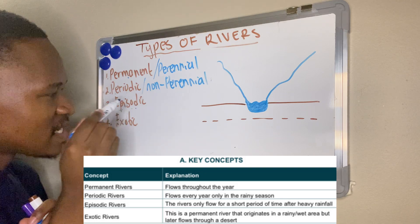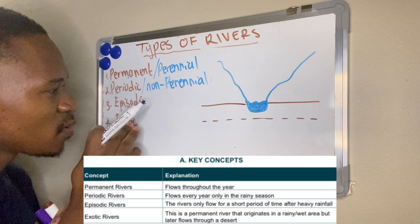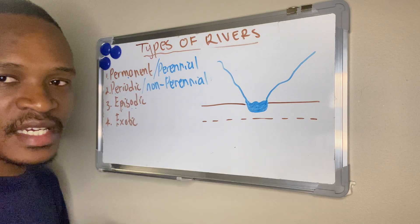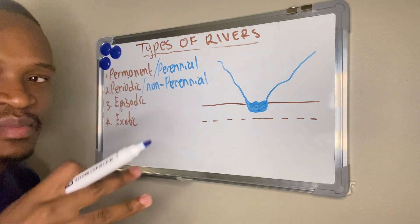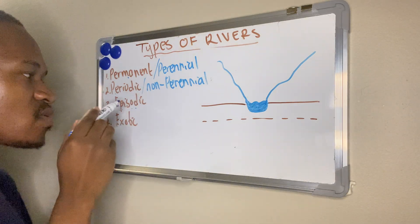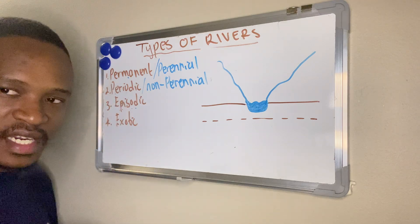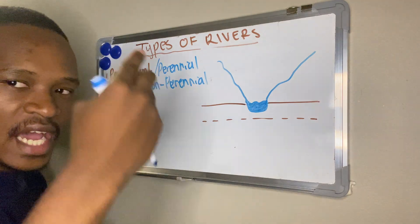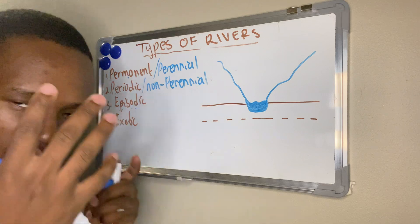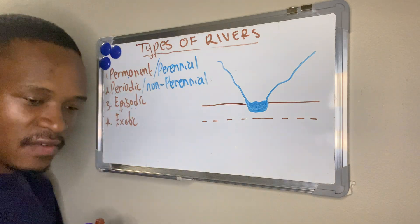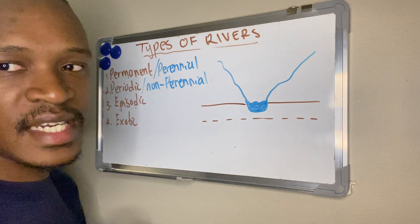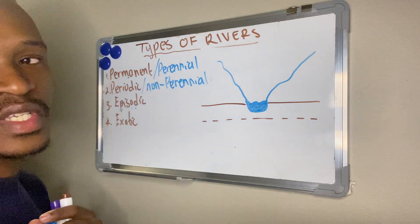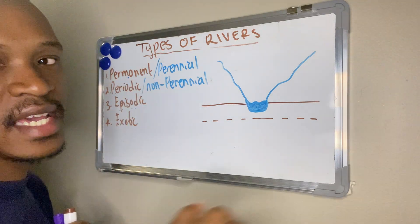The episodic river flows after a period of heavy rainfall and is short-lived after that heavy rainfall. Then lastly, the exotic river — this one originates from an area where there's heavy rainfall, from a wet area, and then it flows across a dry area.